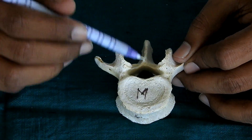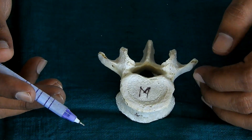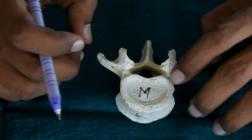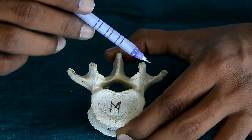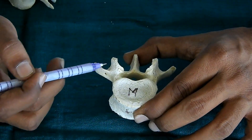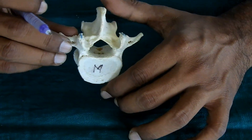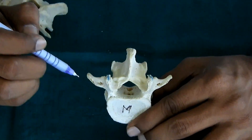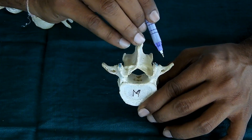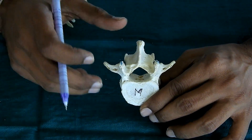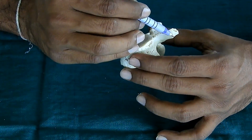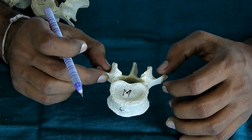The vertebral foramen of the lumbar vertebra is triangular in shape. It is smaller than the cervical vertebra but larger than the thoracic vertebra. The transverse process is thin and tapering, directed laterally and slightly backward. On the posterior inferior part of the root of the transverse process, you can see a small elevation — this is known as the accessory process. The anterior surface of the transverse process is marked by a faint ridge.